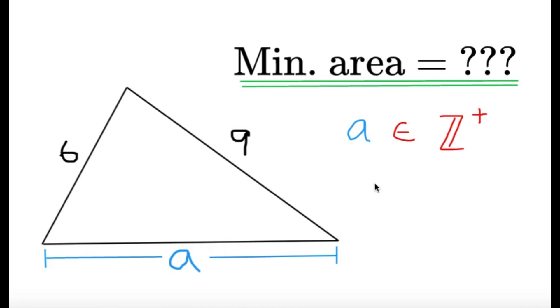For this one, a triangle has sides of 6, 9, and a, where a is a positive integer. Find the minimum area of this triangle.